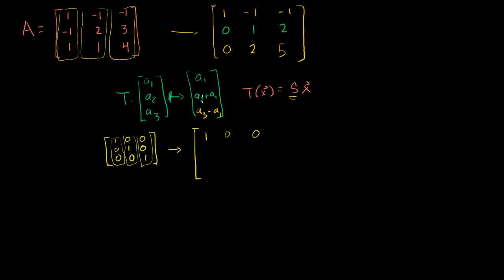The second entry becomes the second entry plus the first entry. So 0 plus 1 is 1, 1 plus 0 is 1, 0 plus 0 is 0. And then the third entry gets replaced with the third entry minus the first entry. So 0 minus 1 is minus 1, 0 minus 0 is 0, and 1 minus 0 is 1. When I apply this transformation to the column vectors of the identity matrix, I essentially performed those same row operations on the identity matrix. This is the transformation matrix S.